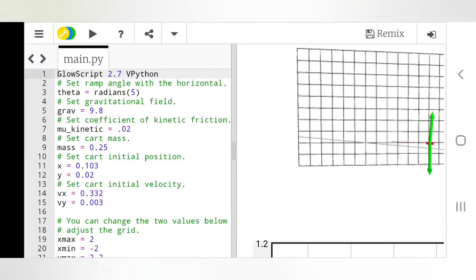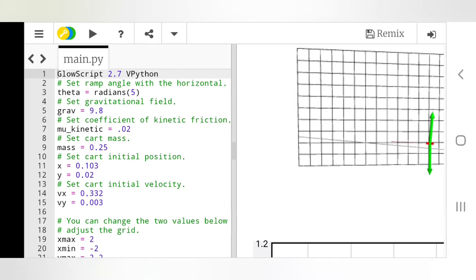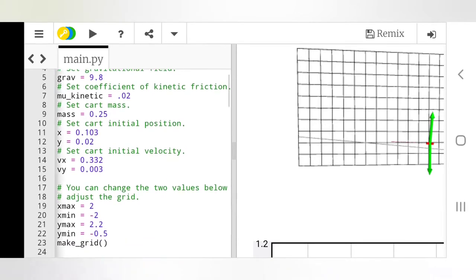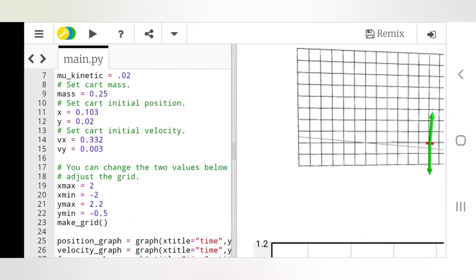Here we have this week's code. Everything's pretty much set up exactly the same and it has always been with a few additional steps, like theta. This week, like I said, we're dealing with an angle. So we have the angle of five degrees. We just put radians in front of it so that the computer calculates it in radians. Gravity, which is always 9.8. And then right here, the mu kinetic, which is 0.02. That's what we calculated. We calculated 0.0195, but 0.02 is close.